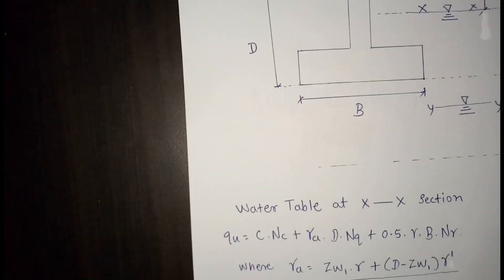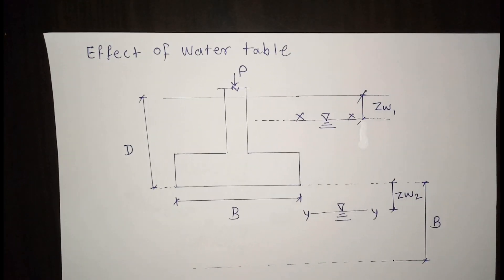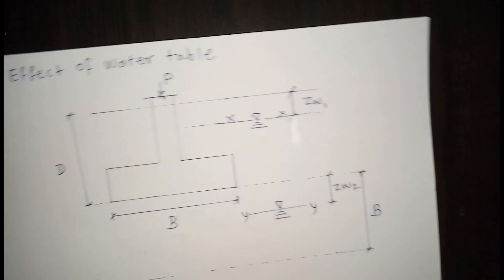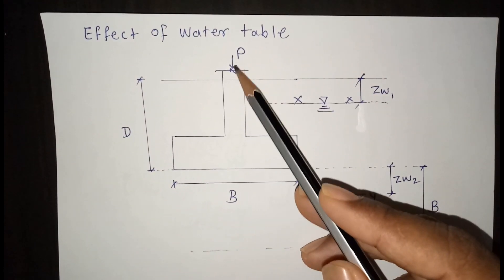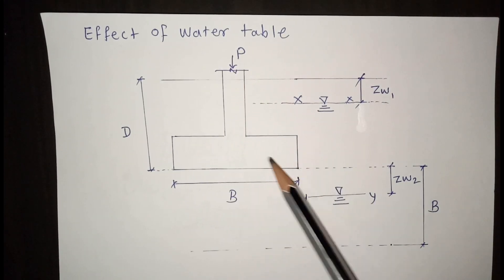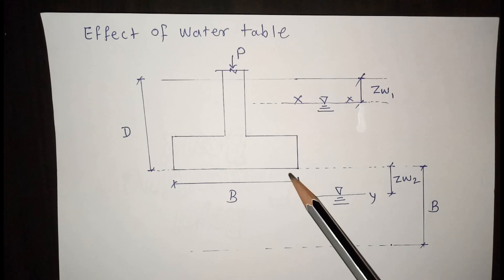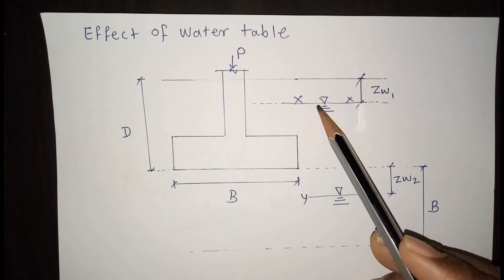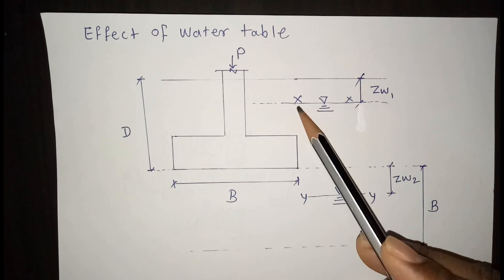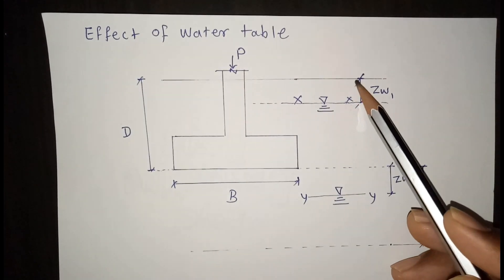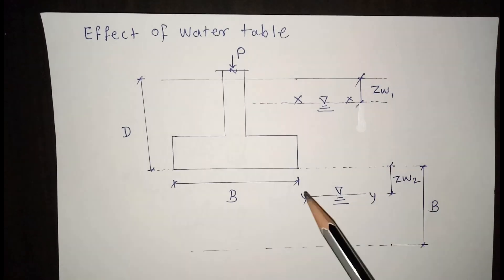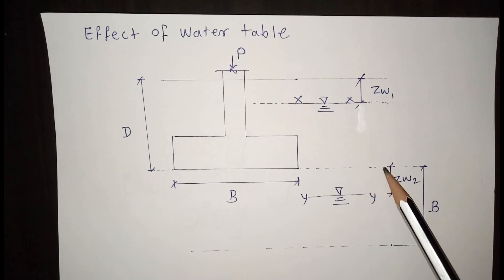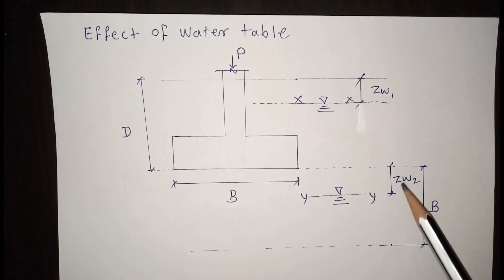Now we will see the effect of water table on bearing capacity. This is a diagram of the foundation showing the axial load from the column, the footing, the depth D, and the width B. The water table at section XX is at depth ZW1 from ground level, and the water table at section YY is at depth ZW2 below the foundation. We only consider the soil within a width B below the base of the foundation.